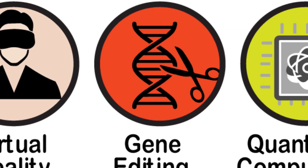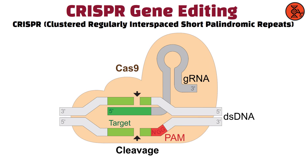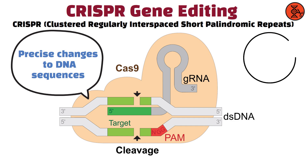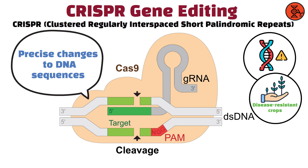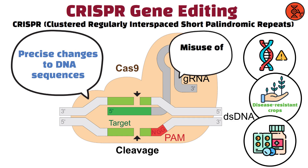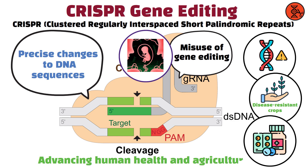CRISPR Gene Editing. CRISPR, clustered regularly interspaced short palindromic repeats, is a revolutionary gene editing tool that allows scientists to make precise changes to DNA sequences. This technology has the potential to treat genetic disorders, develop disease-resistant crops, and create new medicines. CRISPR has raised ethical concerns about the potential misuse of gene editing, such as creating designer babies, but it also holds immense promise for advancing human health and agriculture.